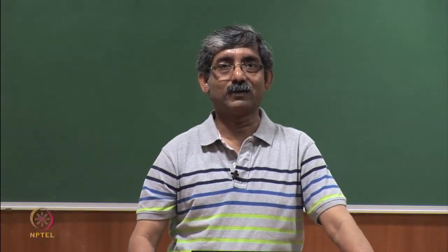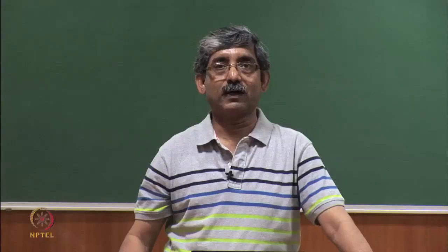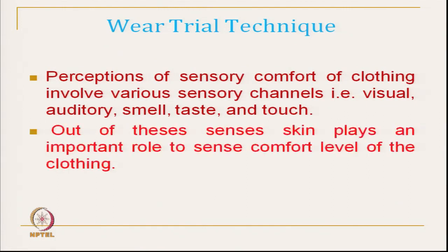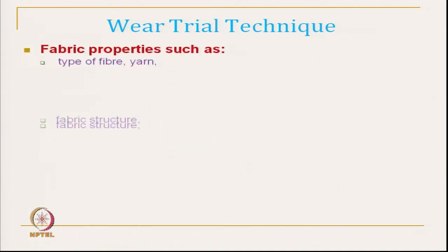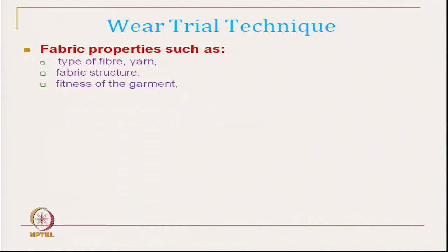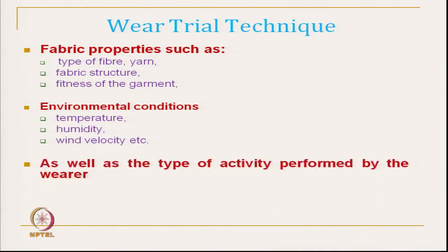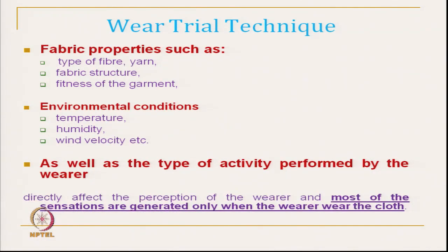We will continue with Wear Trial Technique. In the last class we discussed that Wear Trial Technique is extremely important in clothing comfort related research, where the actual wear situation is important to evaluate the comfort sensation. We also mentioned that it basically depends on fabric related properties — type of fibre, type of yarn, type of fabric structure and type of garment — as well as environment related characteristics like temperature, humidity and wind velocity, and activity level. All these things we can only get if we perform Wear Trial Technique.